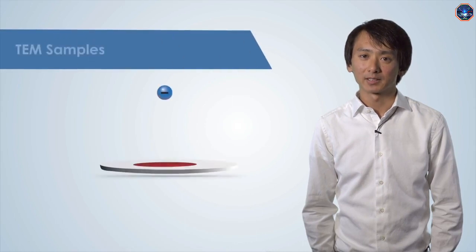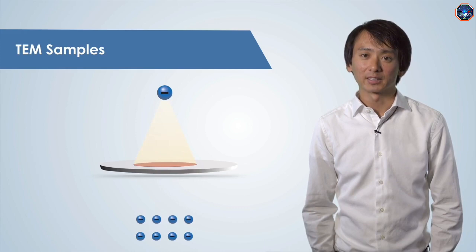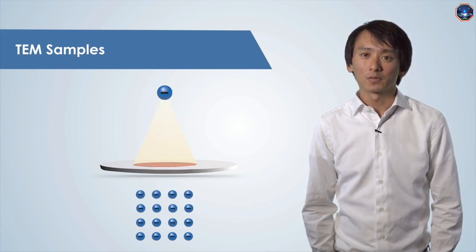As the name indicates, in transmission electron microscopy, electrons travel through the sample. They will interact with the sample in different ways. Those that are transmitted and continue down the column can be used to generate an image.